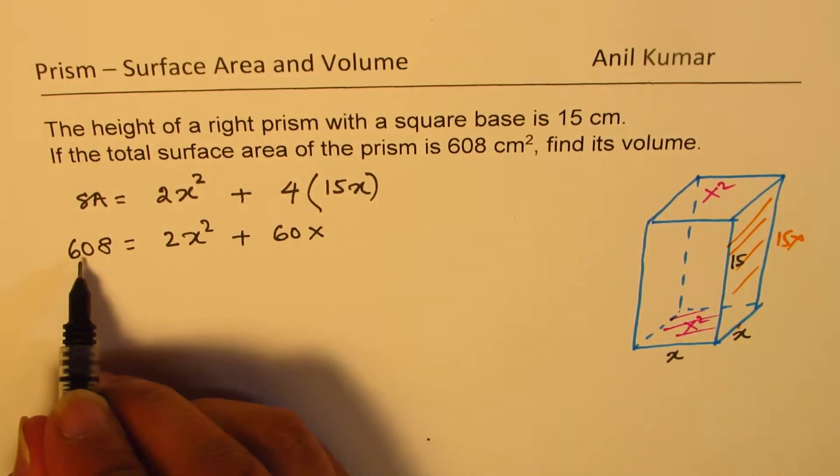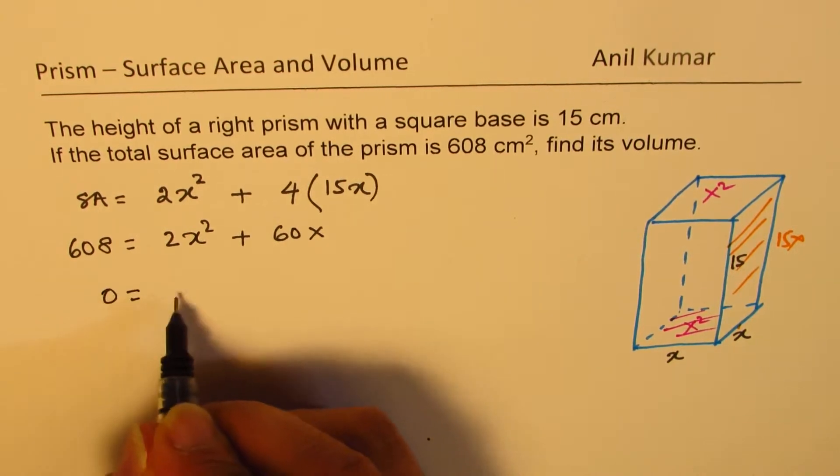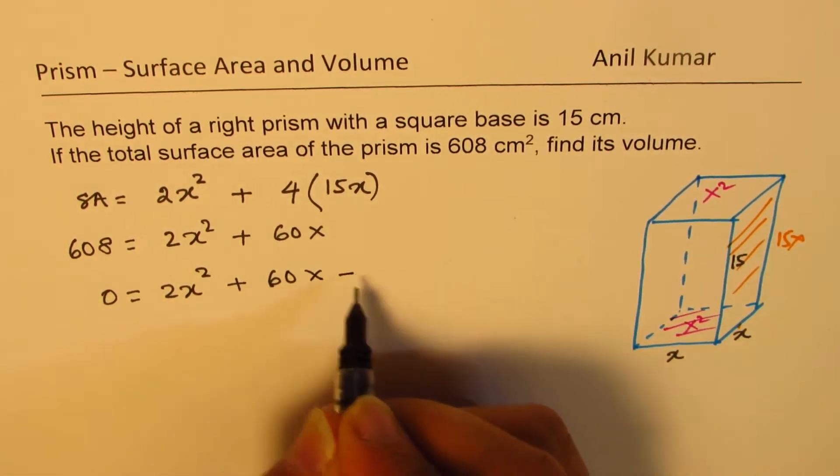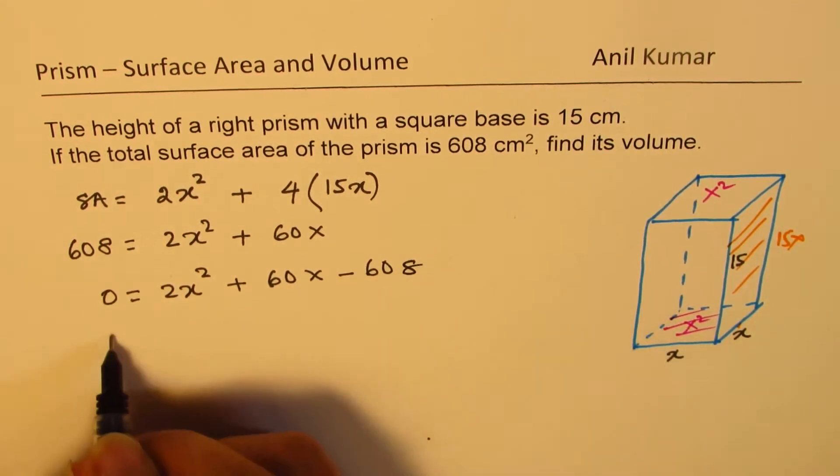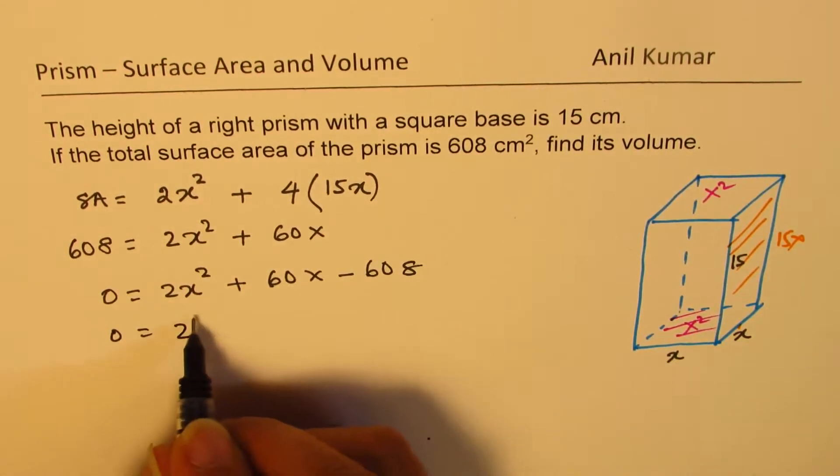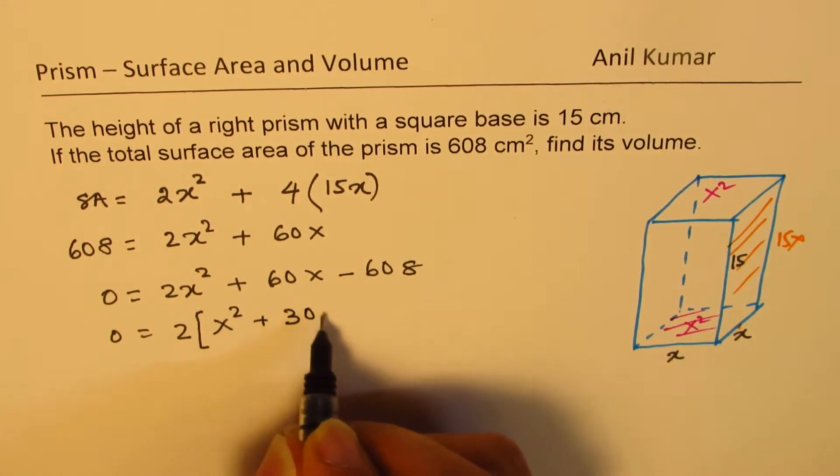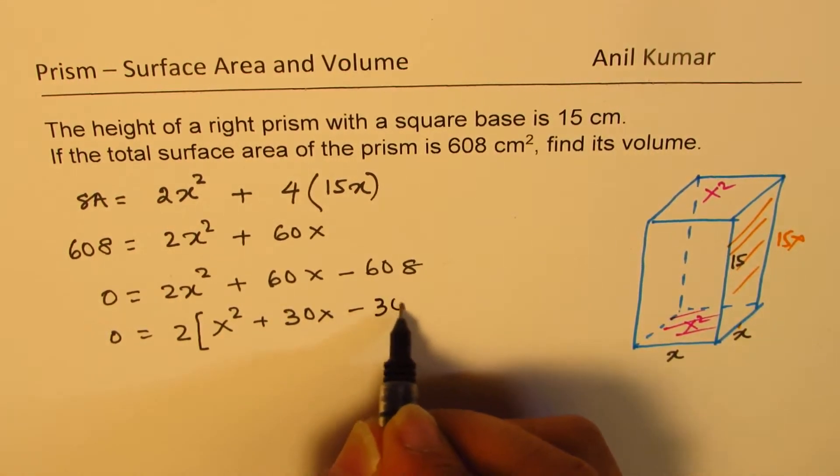Now, to solve this, we should bring everything to one side. So 0 equals 2x squared plus 60x minus 608. We can divide everything by 2. Let me write 2 as common: x squared plus 30x minus 304.